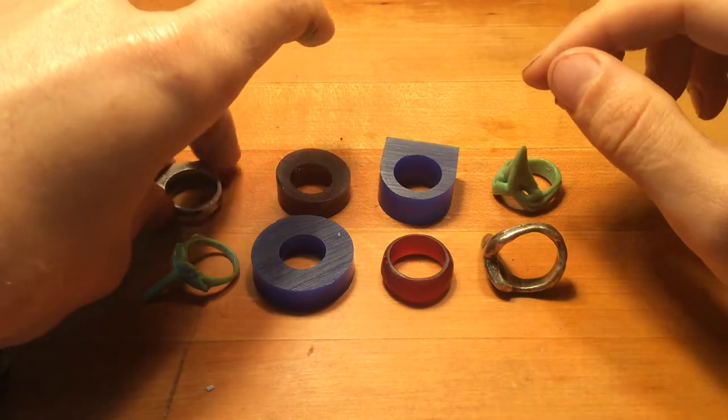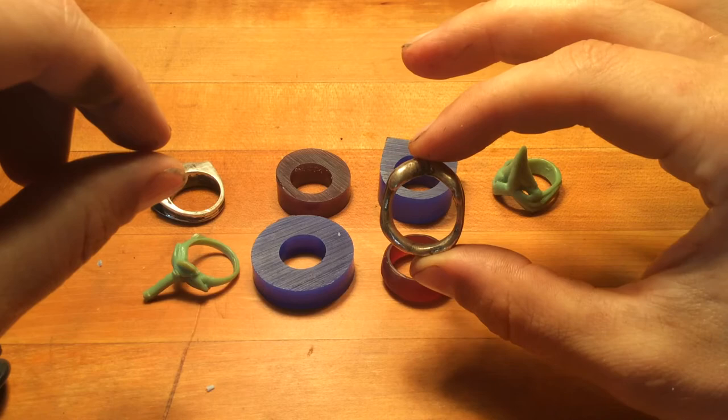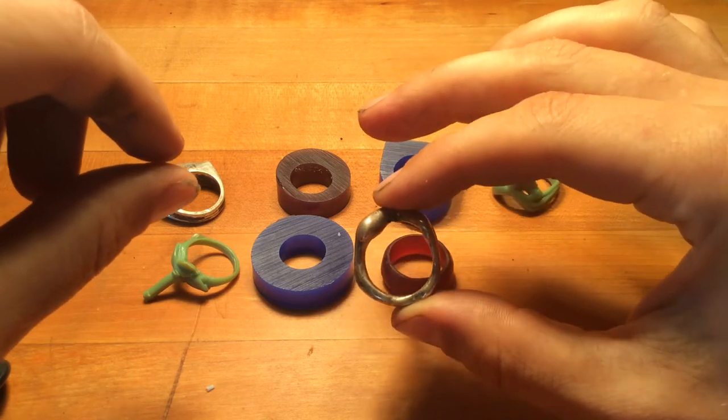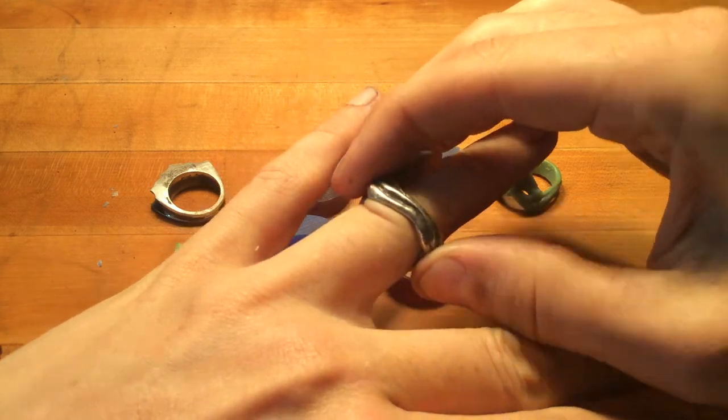A great example of that is this ring here, where although it looks relatively circular, it's slightly elliptical. Because of the knuckles, it goes on sideways.